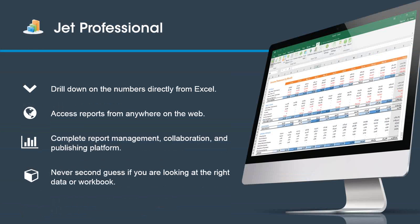The Web Portal also untethered users from the desktop. In the past with Jet, you had to have a desktop copy of Excel — you couldn't use Office 365 or Excel Online. You couldn't take things on the go unless you had your whole computer. Now with the new Web Portal, absolutely anything with internet browser access can run reports and view dashboards — smartphones, tablets, web browsers. It's very much in line with Microsoft and their vision.